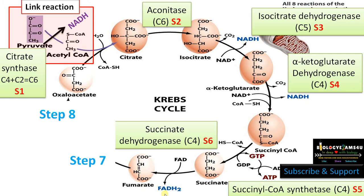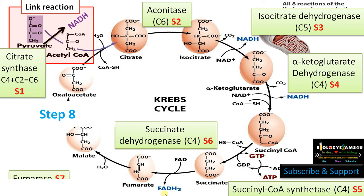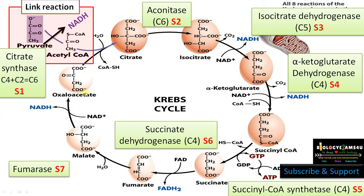In step 7, fumarate is converted to malate by the addition of water, or hydration, and the enzyme is fumarase. Malic acid is formed. Finally, in step 8, malic acid or malate is converted to oxaloacetate by a dehydrogenation reaction forming NADH, thus completing the cycle. The enzyme involved is malate dehydrogenase.